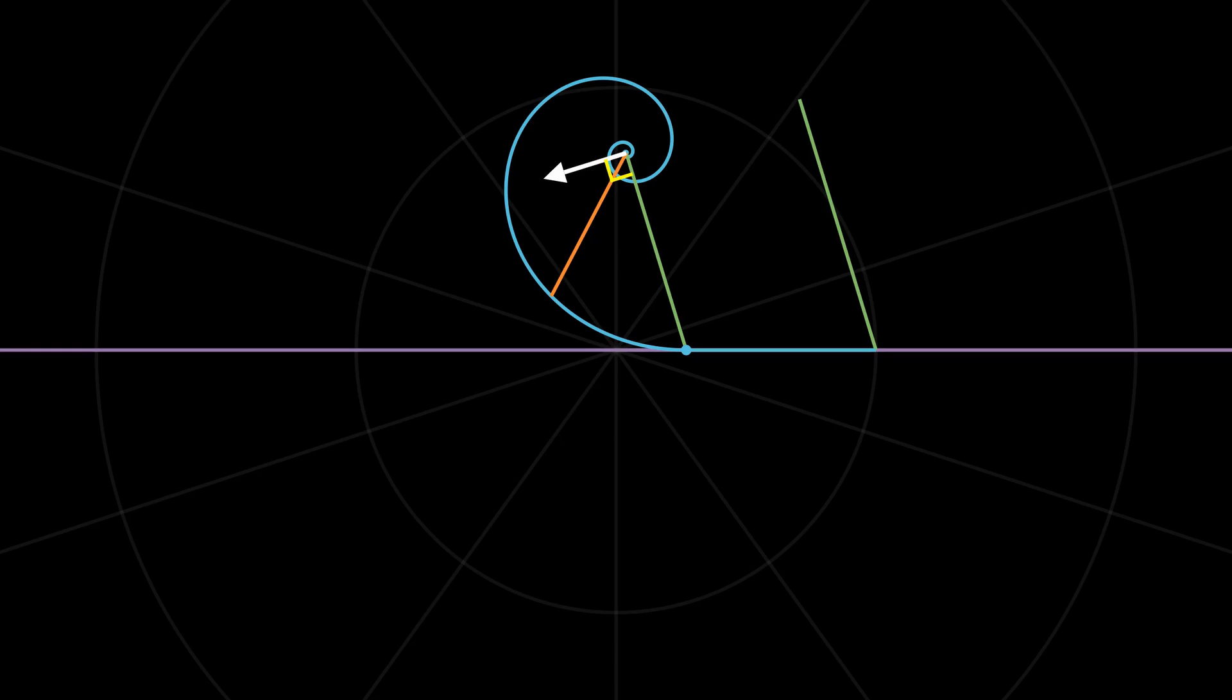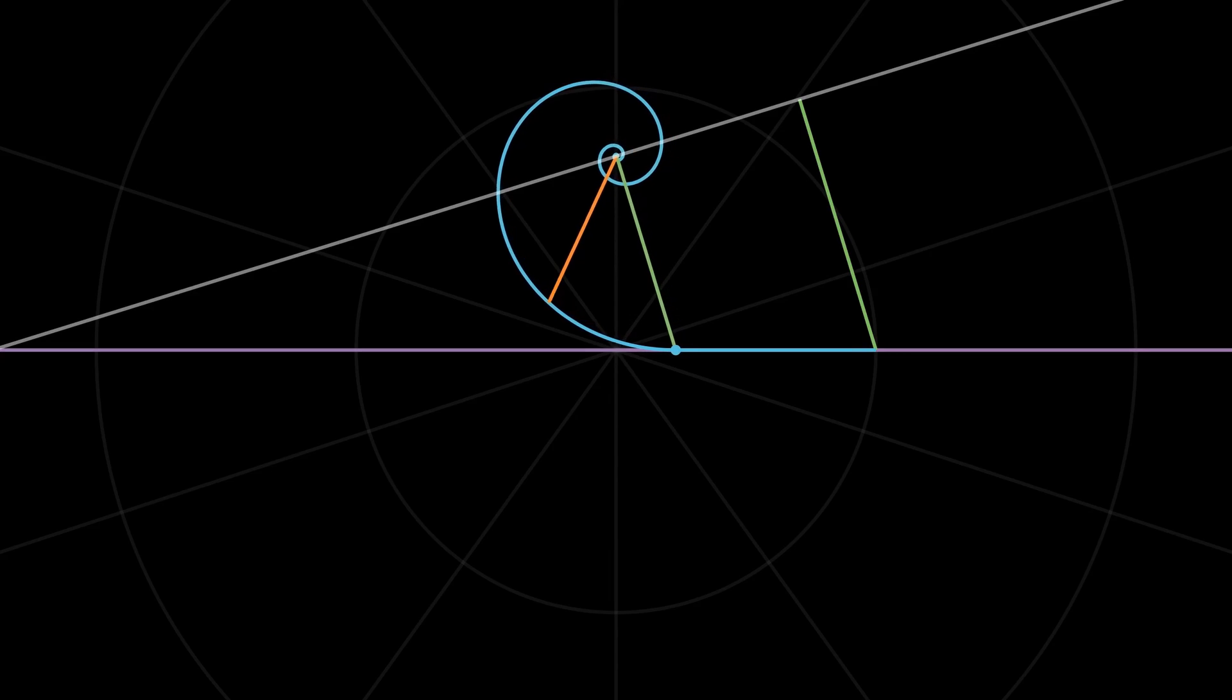As the radial line at all times makes the same angle with the tangent, the pole continues to move in the perpendicular direction. After the curve has rolled a certain distance, we know that the distance through which it has rolled equals the arc length between the two points.